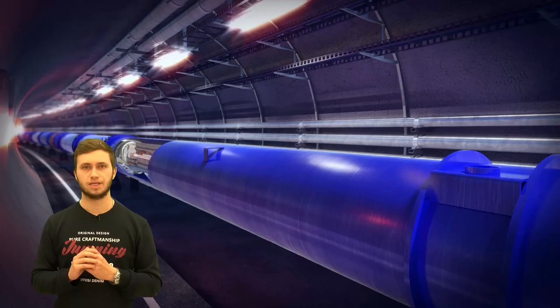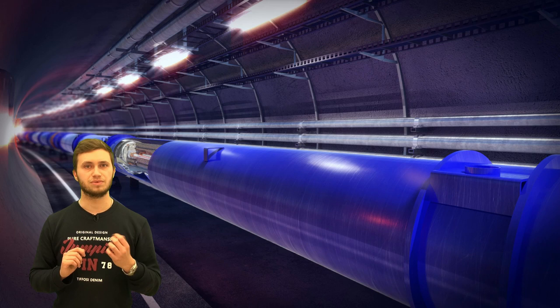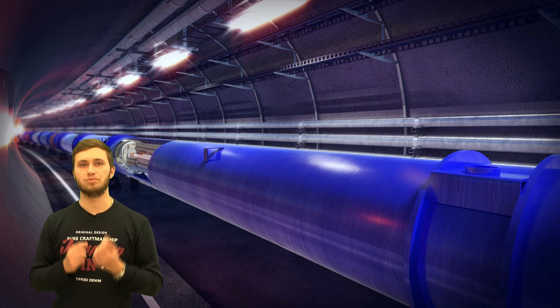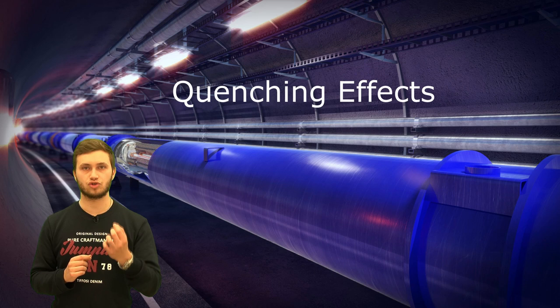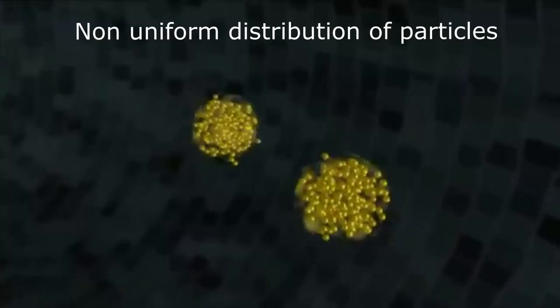When a jet passes through a medium, such as the quark-gluon plasma, it may lose energy, forward momentum, or even gain momentum transverse to its original direction. These are called quenching effects, and are strong indicators of the presence of this fluid. So far, these quenching effects were only seen in heavy ion collisions.